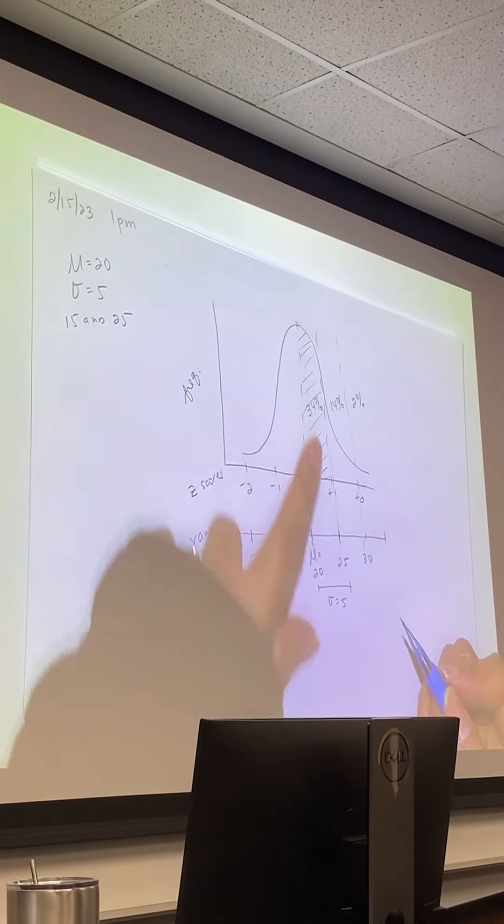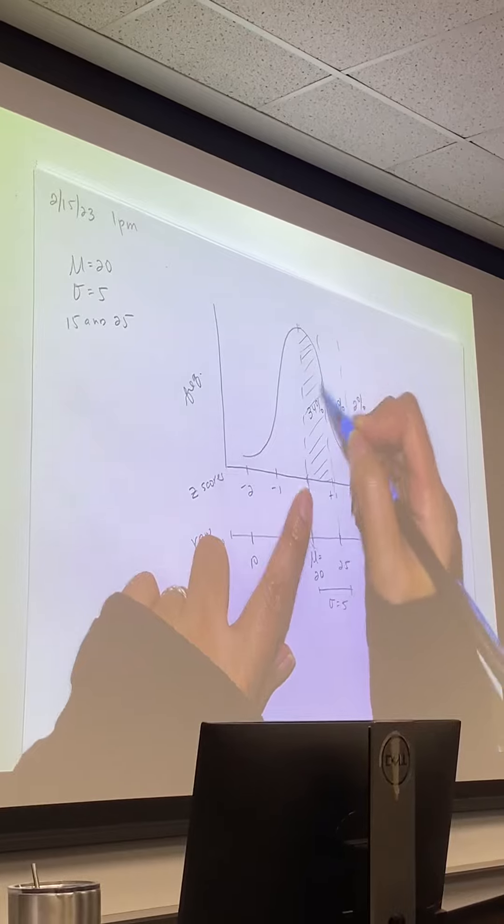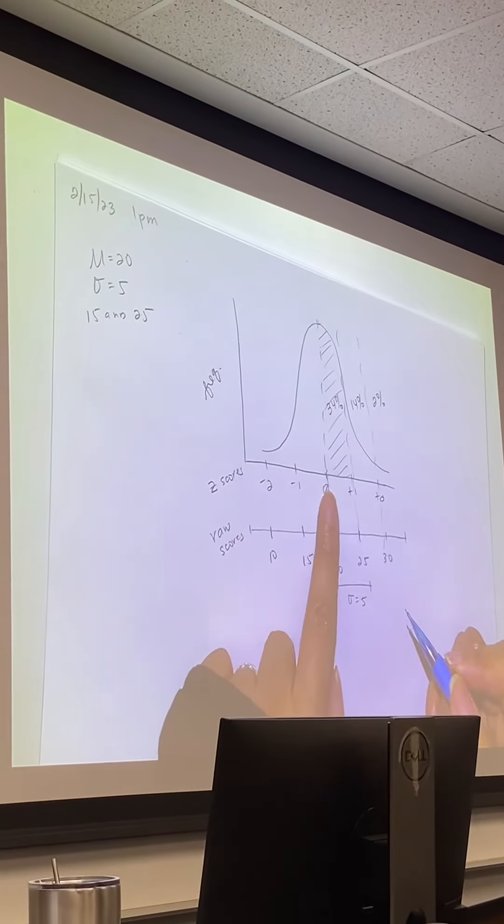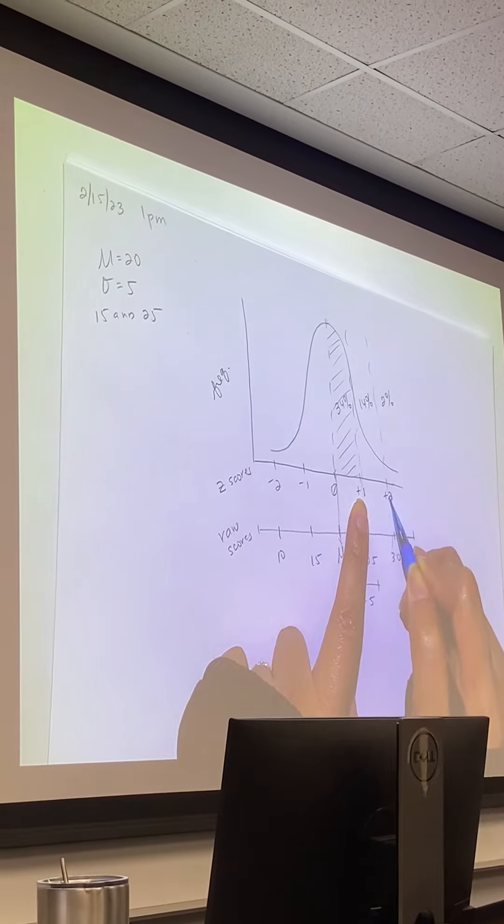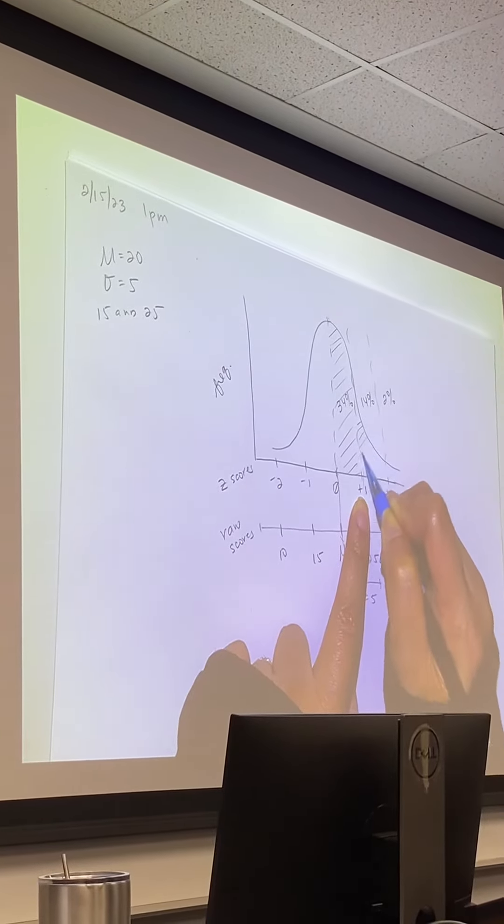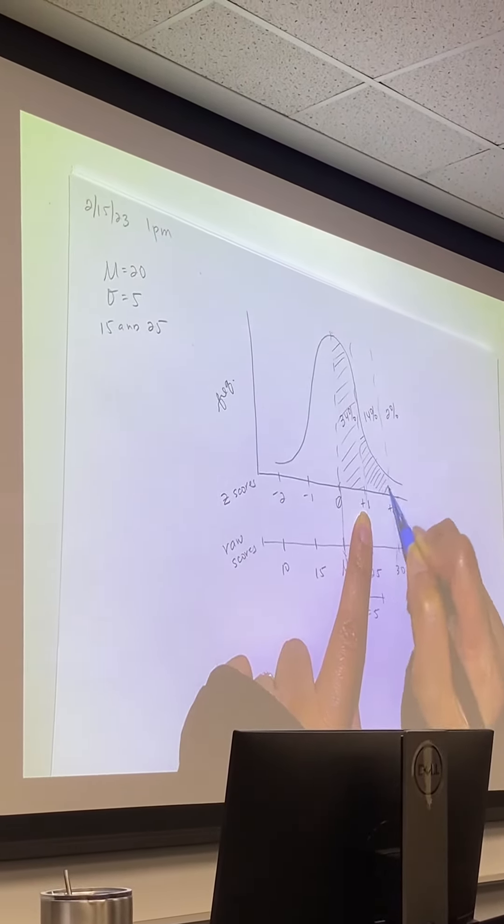So we have 34%. This section represents 34% of scores, whereas this section between positive 1 and positive 2 is smaller, right? Because it only reflects 14% of scores.